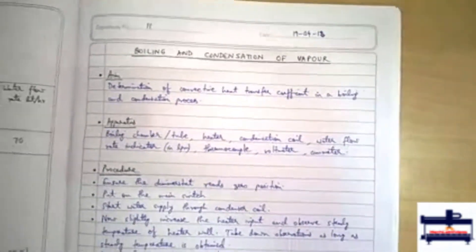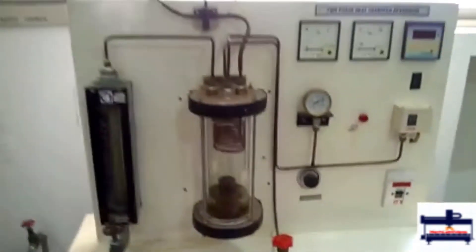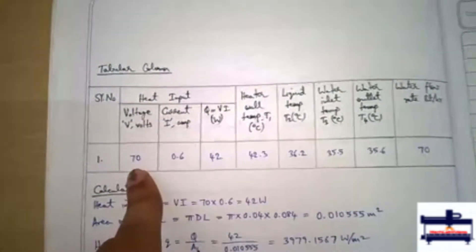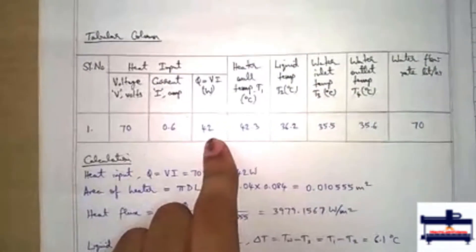This experiment is on boiling and condensation of vapor. This is the experimental setup, and the first thing that is done is the heat input is measured. The voltage and current are taken down from these meters and the heat input is measured, which is